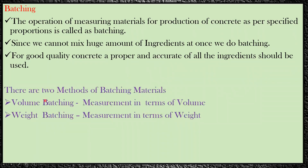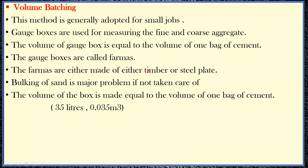There are two methods of batching of materials. The first is volume batching and the second is weight batching. By the words themselves, volume batching means measurement is done in terms of volume, and weight batching means measurement is done in terms of weight. Always remember, weight batching is always better in comparison to volume batching.